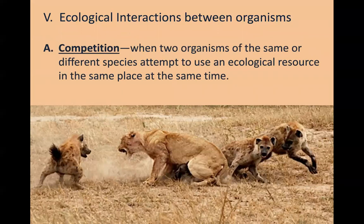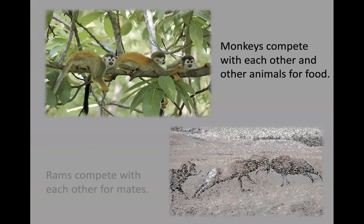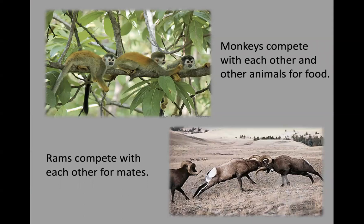Competition occurs when two organisms of the same or different species attempt to utilize or inhabit the same ecological resources at the same time. We see this in the wild and in many different ecosystems. Organisms can compete for food, water, and shelter — all factors that are important for sustaining life and maintaining homeostatic balance. When two organisms attempt to use the same ecological resources at the same time in the same place, it leads to competition. For example, monkeys compete with each other and other animals for food in the same general area, and rams compete with each other during mating season.